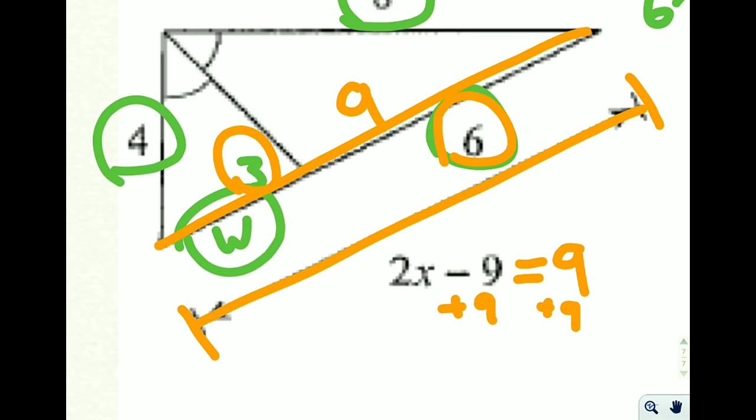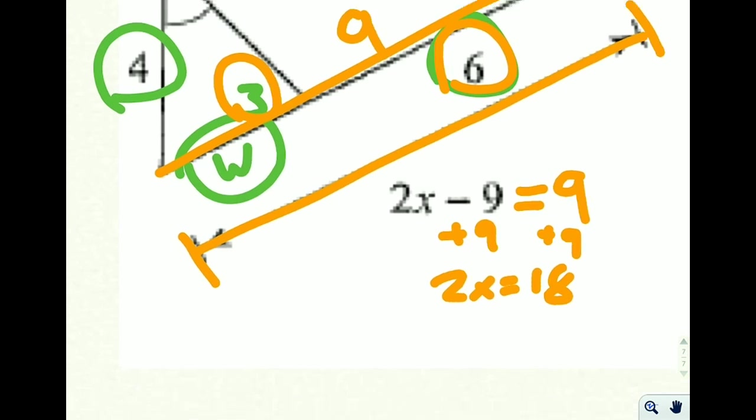Add 9 to both sides, 2x equals 18. And then when we divide both sides by 2, x is 9. Well, we didn't necessarily expect it to have that many 9's in the problem, but x is going to equal 9.